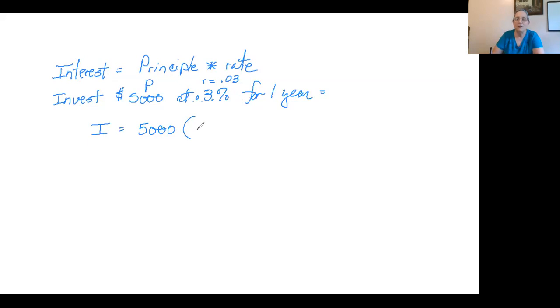If you put 0.3, then you're getting 30% interest, but in this case it's just 3%. So the interest is 5,000 times 0.03, which is going to be $150 for one year.